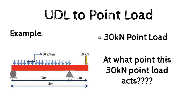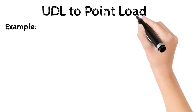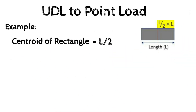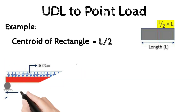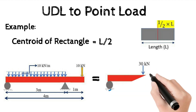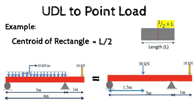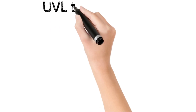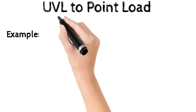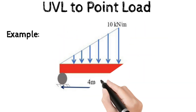We use the centroid concept for this. For a rectangle, the centroid acts at the middle of the length. So using the centroid concept, the 30 kilonewton point load acts at the middle of the 3 meter UDL length, that is at 1.5 meters.